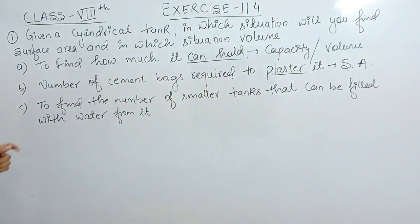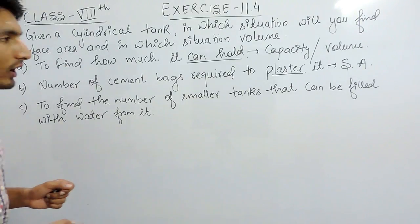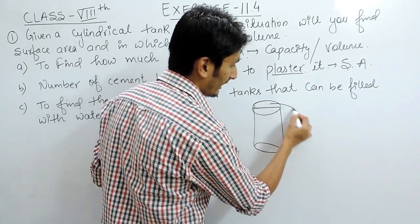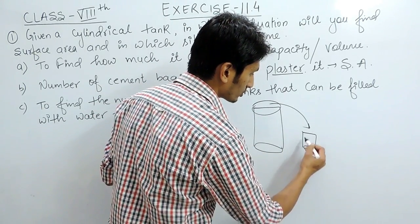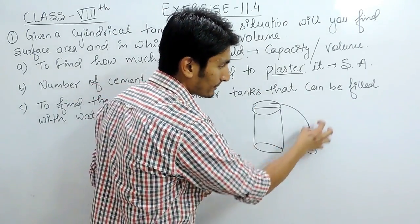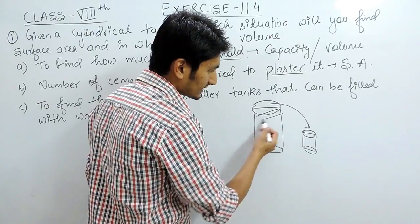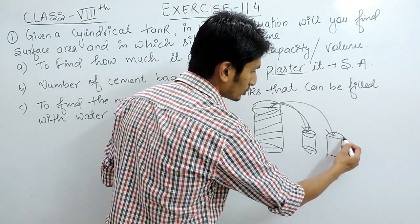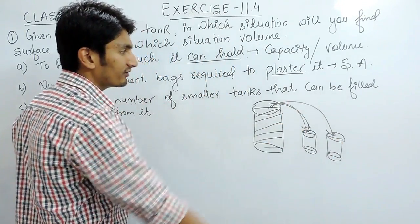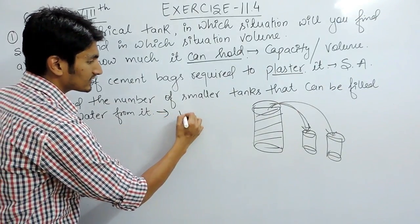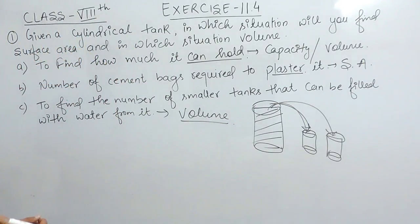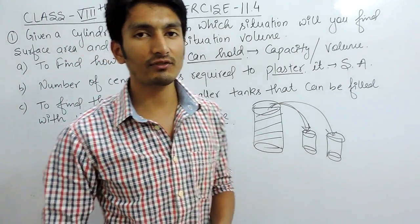In the last case, we have to find the number of smaller tanks that can be filled with water from it. You have a bigger cylinder and you are pouring the water from it into smaller ones — you are transferring its capacity. The water this tank holds has been shifted to smaller tanks, so clearly the capacity is being transferred. In this case we would be finding its volume.